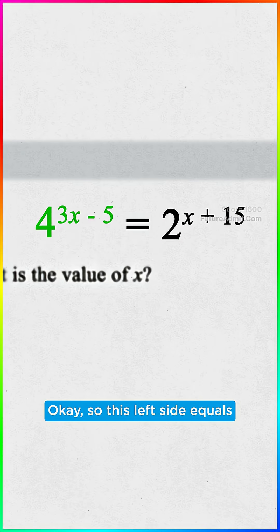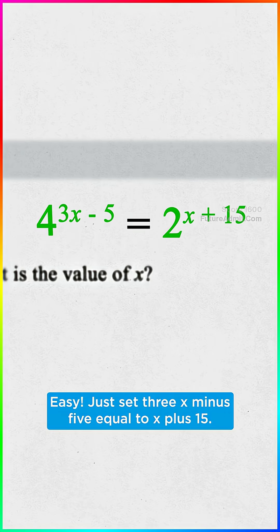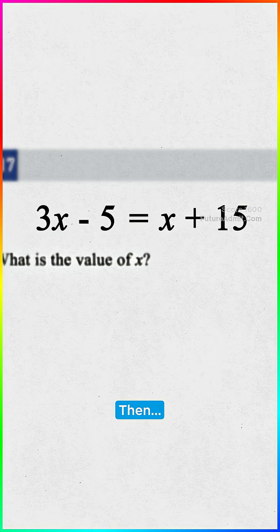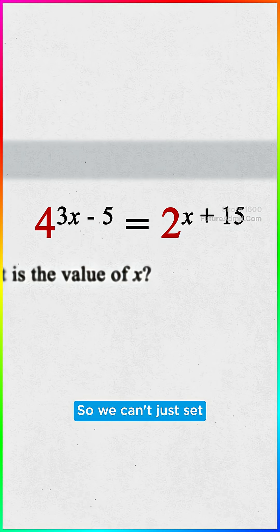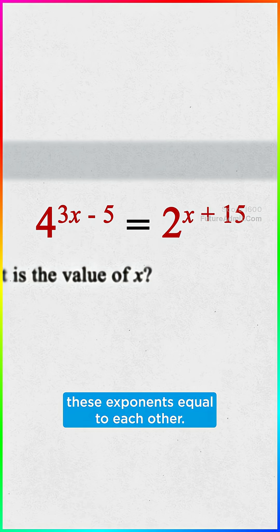Okay, so this left side equals this right side, huh? Easy, just set 3x minus 5 equal to x plus 15, then wait... look at the bases. They're not the same, so we can't just set these exponents equal to each other.